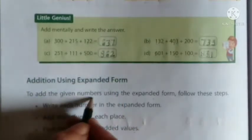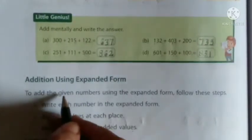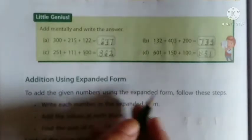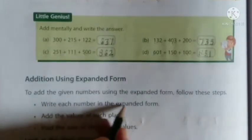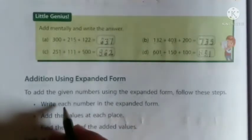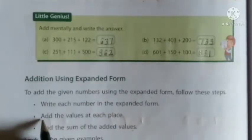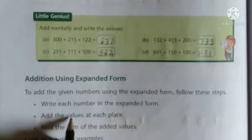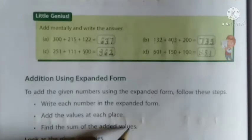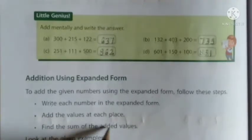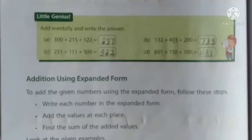To add the given numbers using the expanded form, follow these steps. First, write each number in the expanded form. Then add the values at each place. Then find the sum of the added values. Look at the given examples — some examples are given here. Pay attention.